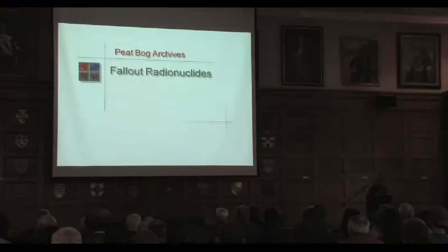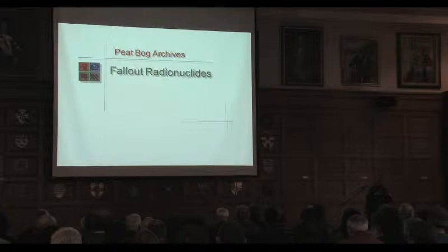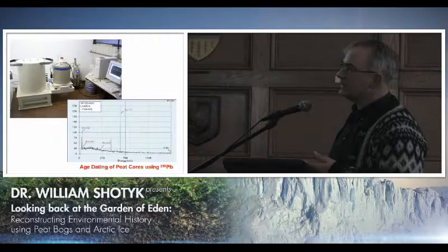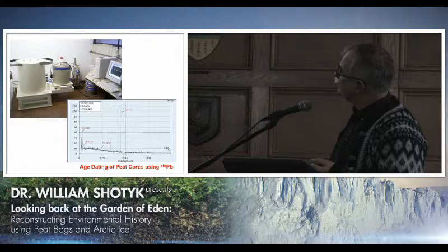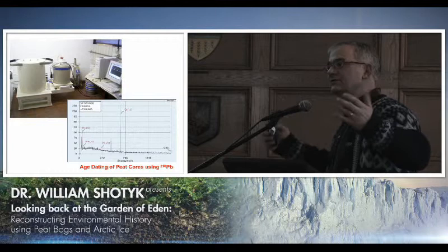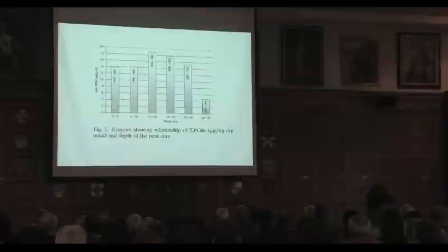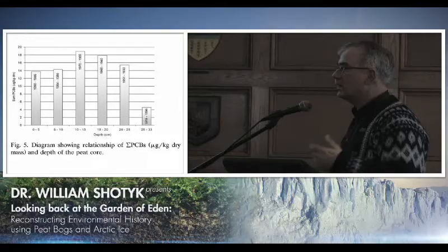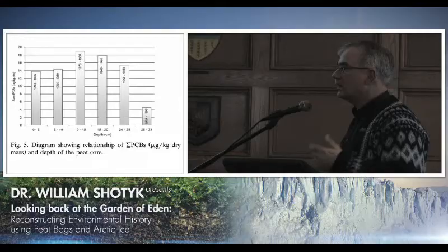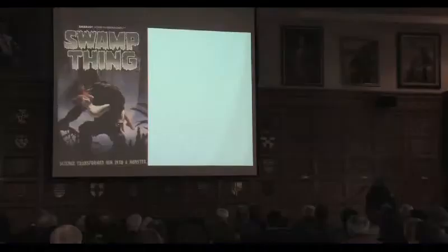Our bogs are also excellent archives of fallout radionuclides. Using gamma spectrometry on a peat sample from London, Ontario from approximately 1960, we can see ²⁴¹Am and ¹³⁷Cs from atomic bomb testing. We can also see that the bog provides a record of the changing fluxes of PCBs in the atmosphere. So the bogs are really amazing archives.